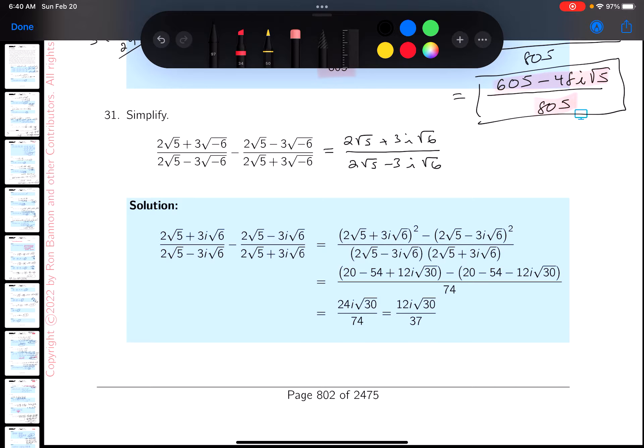I'm going to write this a little differently because I want to put a little work down. So minus 2 root 5 minus 3i root 6, 2 root 5 plus 3i root 6.